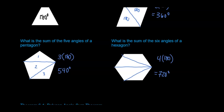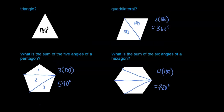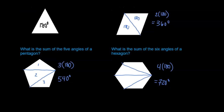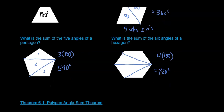So notice: with three sides we have one triangle. Four sides, we have two triangles. Five sides, three triangles. Six sides, four triangles.